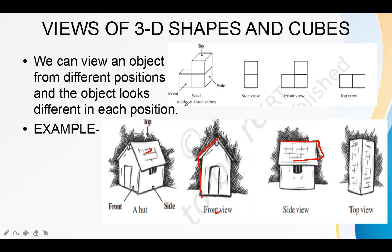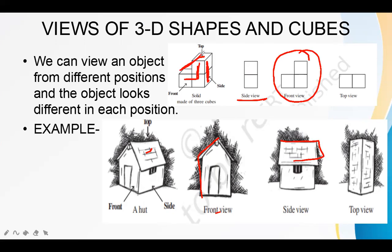If we take a solid made of 3 cubes, its side view will show two faces like this. When we view it from the front, we'll see these three faces and it will look like this. But if we view it from the top, we'll see only two faces, which will look like this.